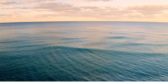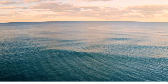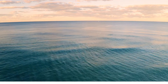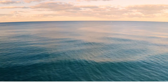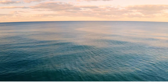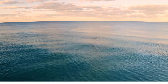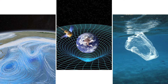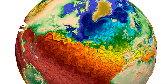Sea level is a term commonly used to represent the average level of the world's ocean. It is important to note that sea level is not entirely constant everywhere due to factors such as ocean currents, gravitational variation, and changes in water density. The concept of sea level is crucial in various fields including geography, geophysics, and climate science.